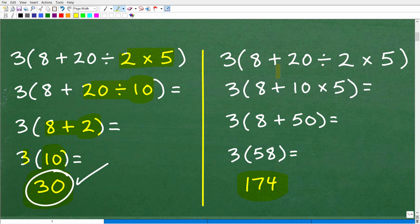And maybe this is the right answer. But let's take a look at this other way of doing this problem. So here's our problem. And now maybe this time I'm going to go 20 divided by 2. That's 10. So instead of doing 2 times 5, I'm going to start here. 20 divided by 2, that's 10. So 10 times 5 now, that's 50. This is good right here, right? So 50 plus 8 is 58, and 58 times 3 is 174.